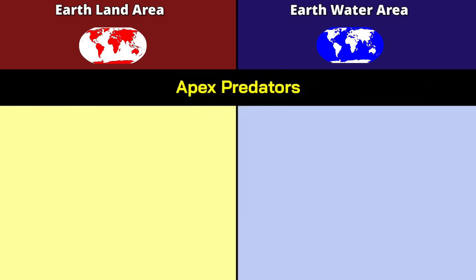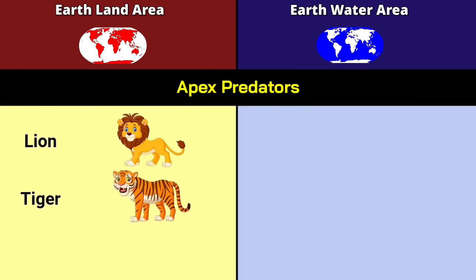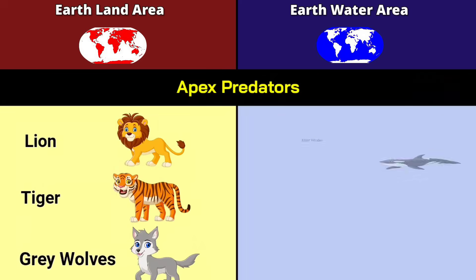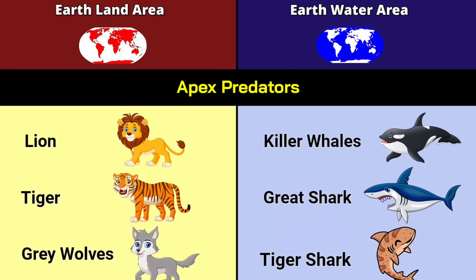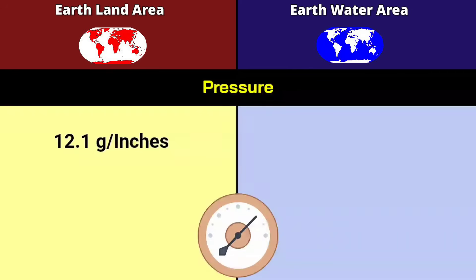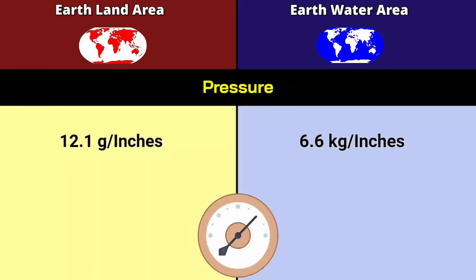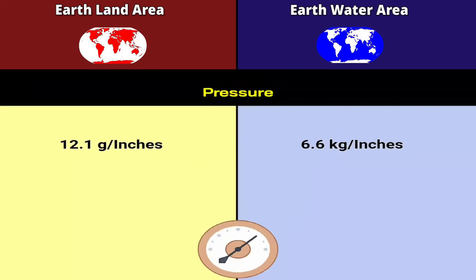Apex predators on land: lion, tiger, and gray wolves. In water: killer whales, great white shark, and tiger shark. Pressure: land at 12.1 grams per inch, water at 6.6 kilograms per inch.